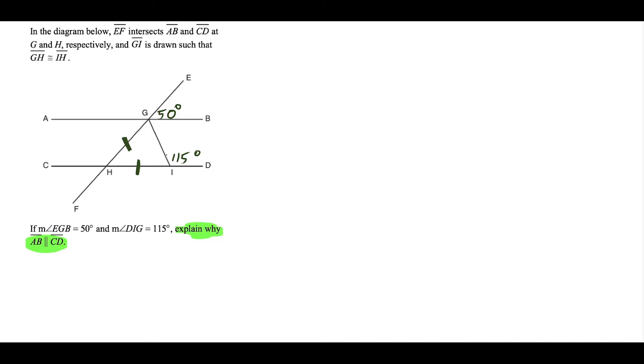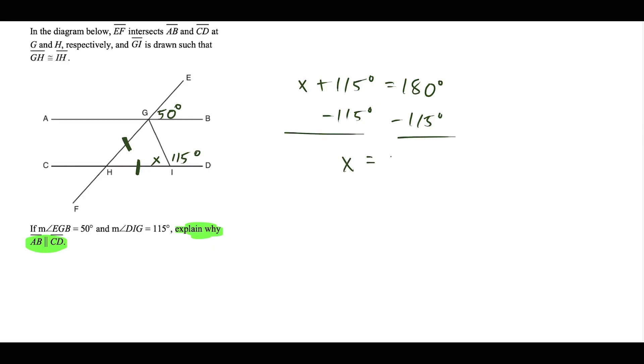Since we're trying to show the lines are parallel, that's the conclusion, not the starting point. We note that angle GIH forms a linear pair with angle GID. Calling angle GIH as X, we have X plus 115 degrees equals 180 degrees. Subtracting 115 from both sides tells us X equals 65 degrees.